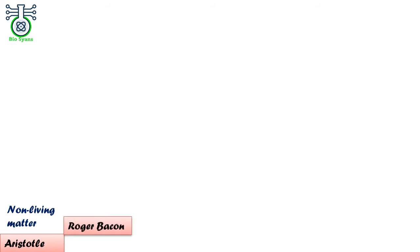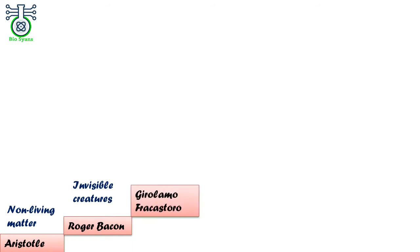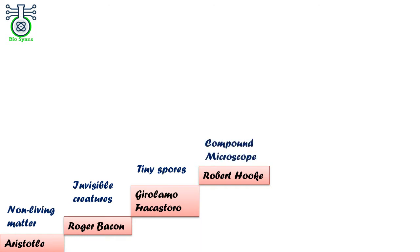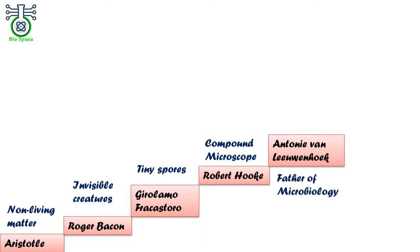Let's go back to the history of it. Aristotle gave the theory of spontaneous generation, proposing that life arose from non-living material. In the 13th century, Roger Bacon postulated that diseases are caused by invisible creatures. In 1530, Girolamo Fracastoro proposed that epidemic diseases are caused by transmission through tiny particles or spores. In 1665, Robert Hooke made the first compound microscope and observed plant cells.